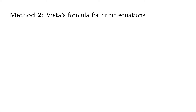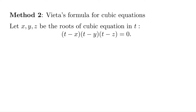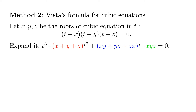The second approach uses Vieta's formula for cubic equations. Let x, y, z be the roots of a cubic equation in t: t minus x times t minus y times t minus z equals 0. Expanding the left-hand side and combining like terms in t, we have t cubed minus x plus y plus z times t squared plus xy plus yz plus zx times t minus xyz equals 0. This is the so-called Vieta's formula for cubic equations.